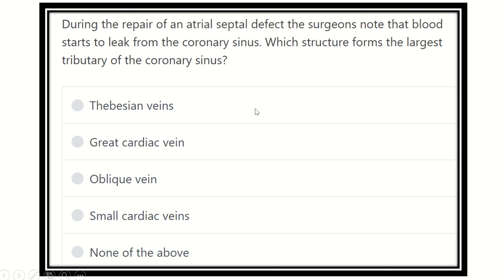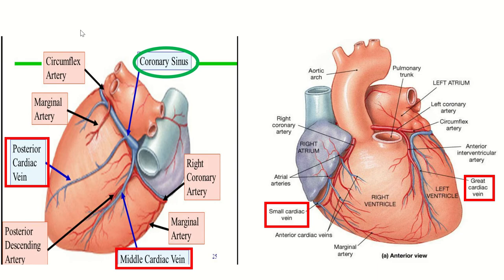Hello everyone, today we are going to discuss another question regarding MRCS based on EMRCS. We will discuss all the questions of EMRCS, all the questions of focus sheets and recall questions. During the repair of atrial septal defect, the surgeon notes that blood starts to leak from the coronary sinus. Which structure is formed from the largest tributary of the coronary sinus?